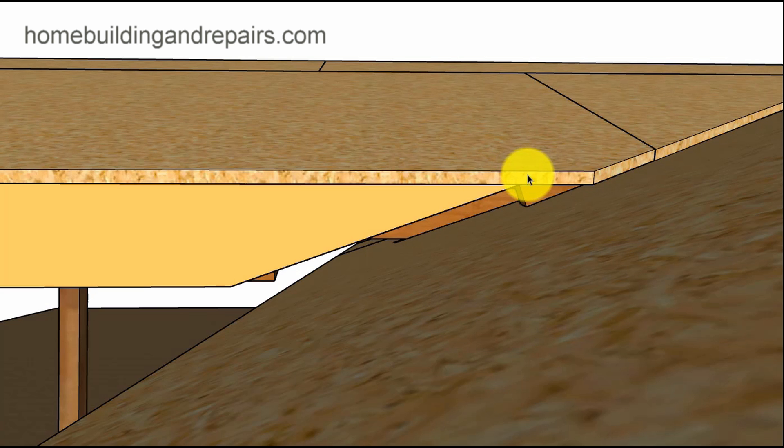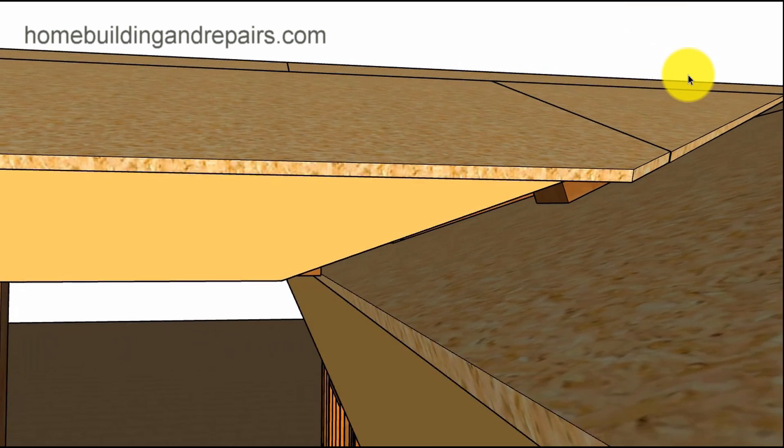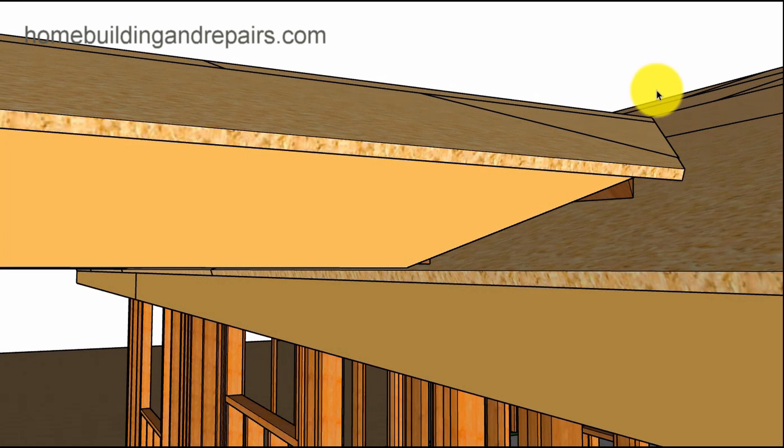And you can see here what it looks like with the roof sheathing. Nice and tight here. The sheathing will nail into this nailer here and probably finish something like this.